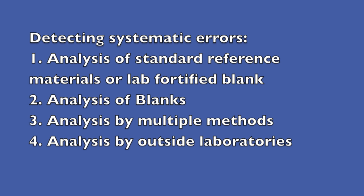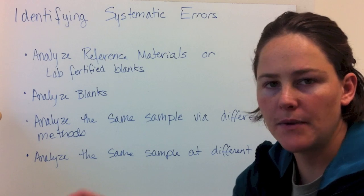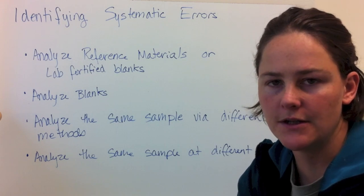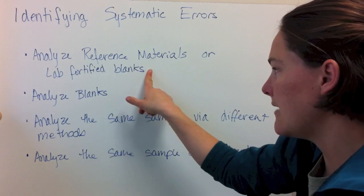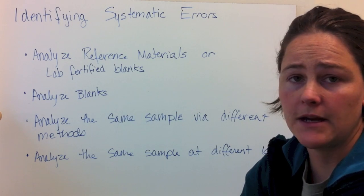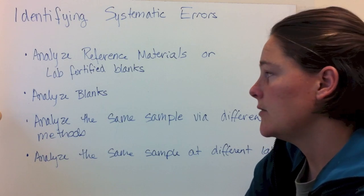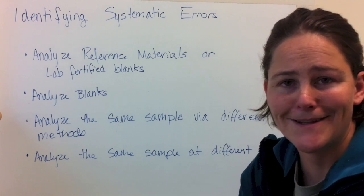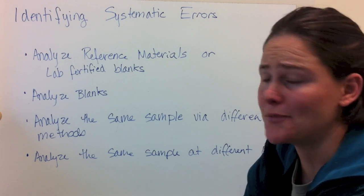All right. So you can analyze reference materials or if you have a sample, you can make up something very similar to your sample in the same type of matrix and then run that. Let's call it a lab fortified blank. You can analyze blanks. That might help you know if your whole baseline is shifted. If your blank is reading something other than zero, then you often will have a problem.